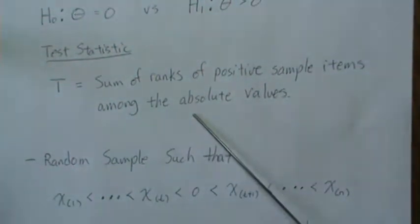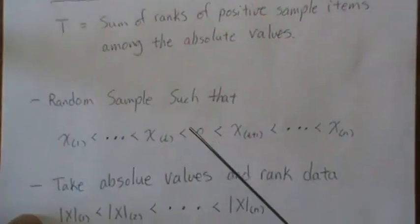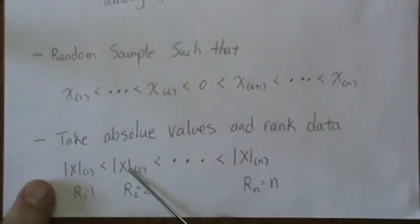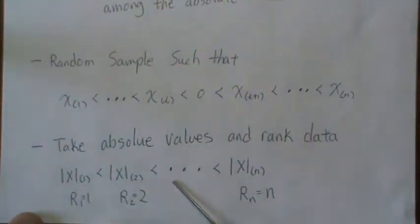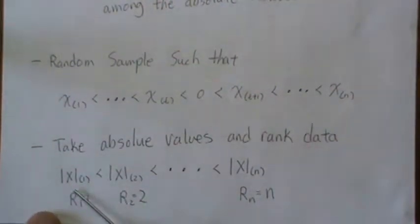To calculate the signed rank test, what we do is we take the absolute value of each of these, and then we put those absolute values in order. An absolute value is a distance from zero in this case.